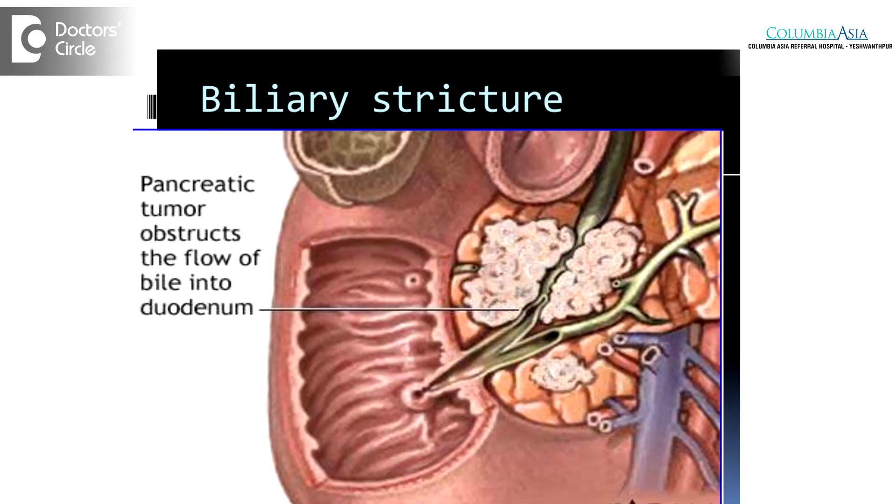The second could be infections, which is one of the common complications that we see post-transplantation because of immunosuppression. These infections can be a milder form or a severe form, and they are usually treatable with antibiotics. The other complications would be biliary complications, which could be in the form of a leak — which is an early complication — or a stricture, which is usually a delayed complication.